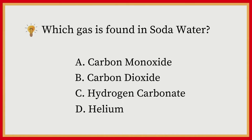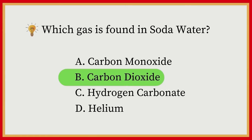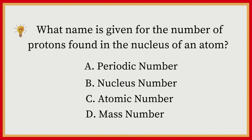Which gas is found in soda water? A) Carbon monoxide, B) Carbon dioxide, C) Hydrogen carbonate, D) Helium. Answer: B, Carbon dioxide. What name is given for the number of protons found in the nucleus of an atom? A) Periodic number, B) Nucleus number, C) Atomic number, D) Mass number. Answer: C, Atomic number.